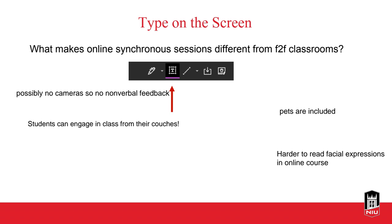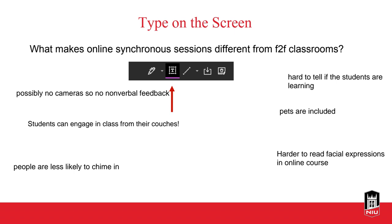Some different observations are coming in: it can be harder to read facial expressions in an online course, even if cameras are turned on. Students can engage from their couches — maybe even in their pajamas. If cameras are off, there's no nonverbal feedback. Pets are included too — as an online student, one of my birds escaped from his cage mid-class and I had a bird standing on top of my head on Zoom camera.